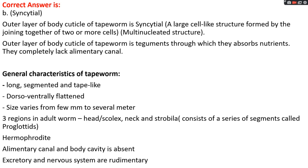Other characteristics of tapeworms: they are long, segmented, tape-like structures; dorsoventrally flattened; size varies from a few mm to several meters. The body is divided into three regions: head (scolex), neck, and body. The body portion is known as strobila, which consists of different segments called proglottids. Each single segment is hermaphrodite — both female and male reproductive organs are present. Alimentary canal and body cavity are completely absent; nutrients are absorbed via the cuticle, known as tegument. Excretory and nervous systems are present in rudimentary form.